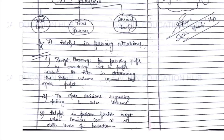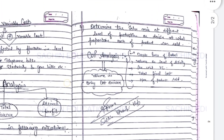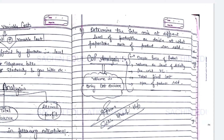Our third point is that CVP analysis is helpful in preparing a flexible budget. By considering the three types of cost, it is easy to prepare a flexible budget which contains all types of cost at different levels of production.